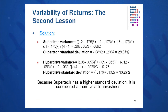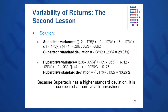For Supertech's variance, I'll take the sum of the squared deviations — 0.2675 — and divide by T minus one observations. With four observations, I divide by three, giving a variance of 0.0892. Then to get the standard deviation, I take the square root of 0.0892, which is 29.87%. That indicates Supertech is a highly volatile investment — it has a higher standard deviation and higher variance than Hyperdrive, making it more volatile.